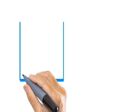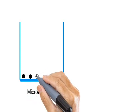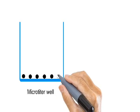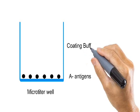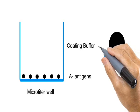Now let us see the actual protocol for indirect ELISA. What you are looking at now is the small microtiter well of the microtiter plate. In the first step, this microtiter well is coated with A antigen. Remember, we want to detect the presence of anti-A antibodies in the sample, that's why we are coating A antigen in the microtiter well. This coating or binding is initiated with the help of coating buffer, which helps to bind the antigen so firmly to the well that it cannot be removed even by washing.